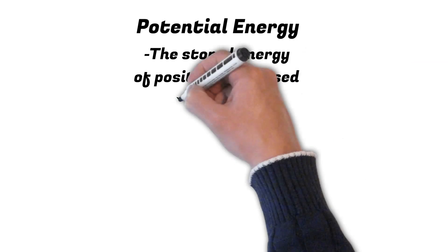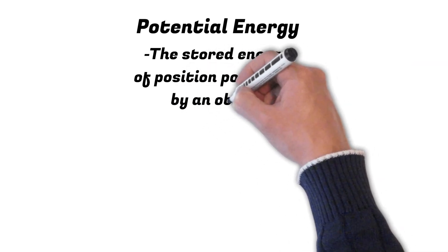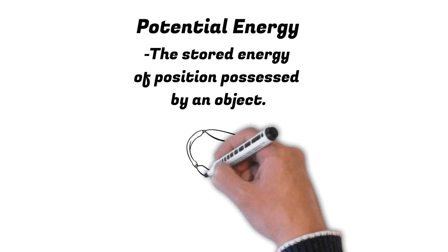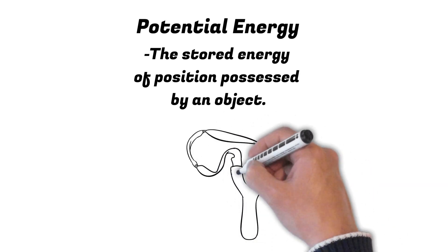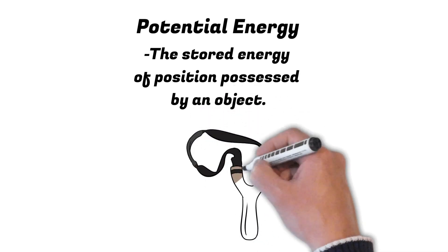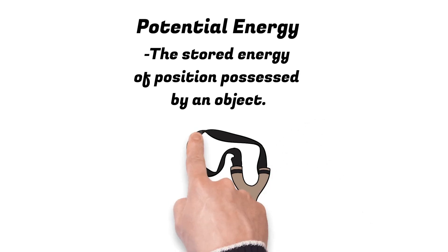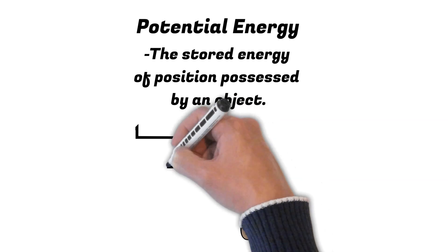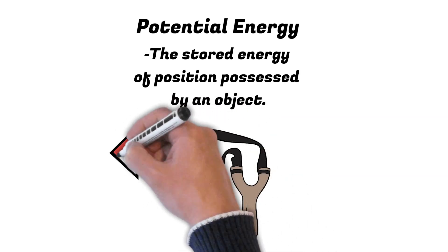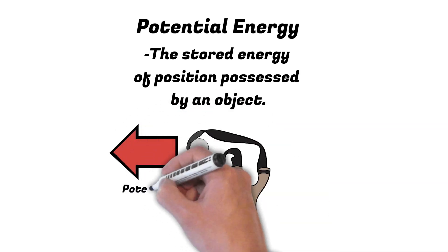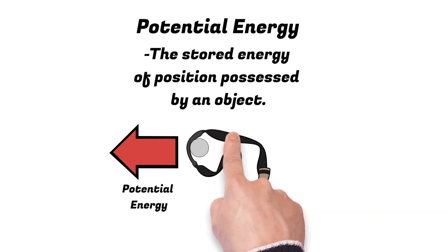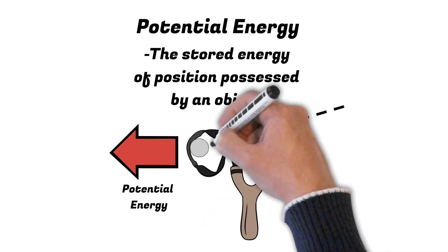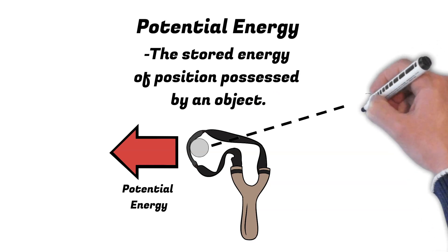Essentially potential energy is the stored energy of position possessed by an object. An example of this is a rock in a slingshot. As it is being pulled back, it has a lot of potential energy. The further it is pulled back, the more potential energy it has. As it is let go, that potential energy is transferred to kinetic energy as it flies through the air.